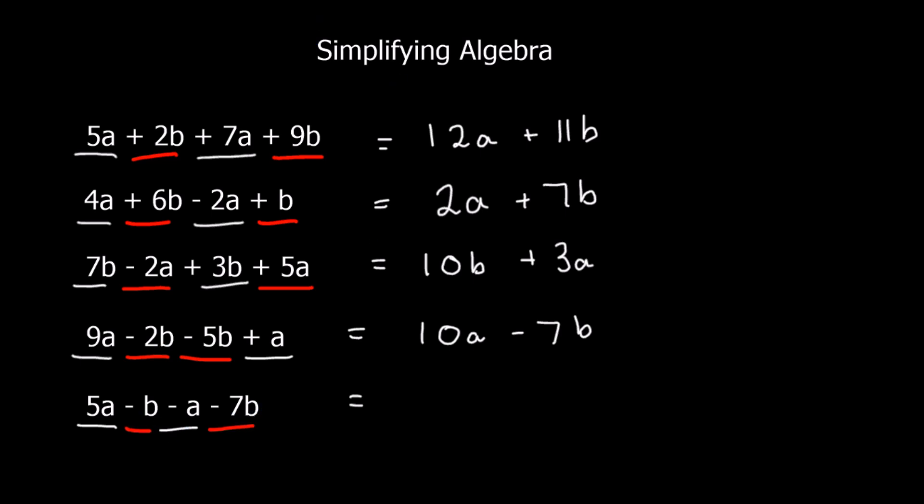So, 5a take away 1a, is 4a. And minus 1b, take away another 7b, is minus 8b.